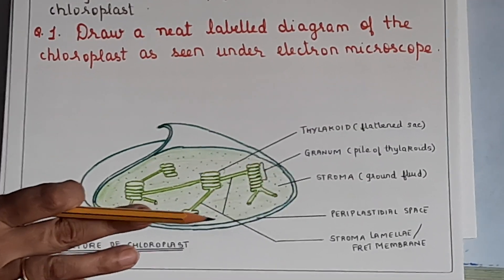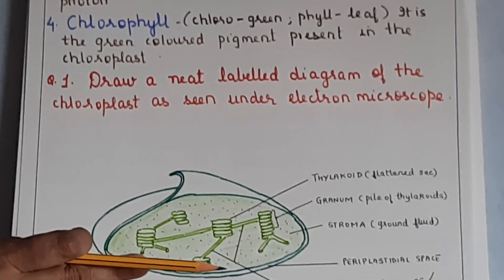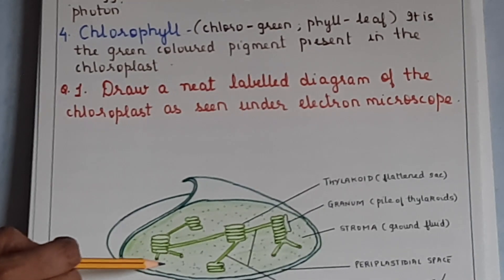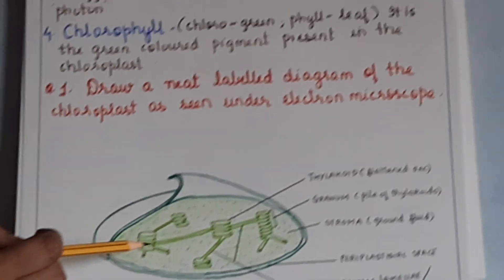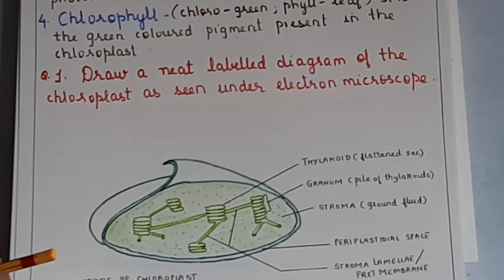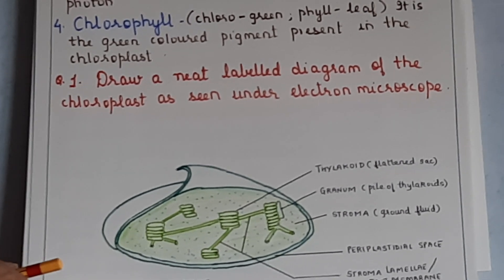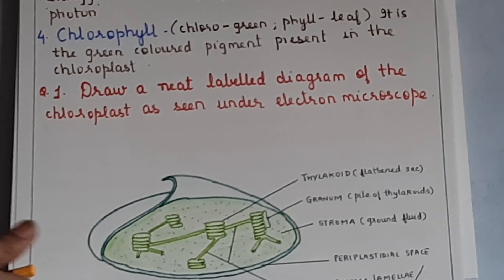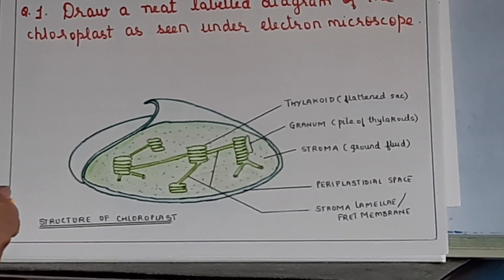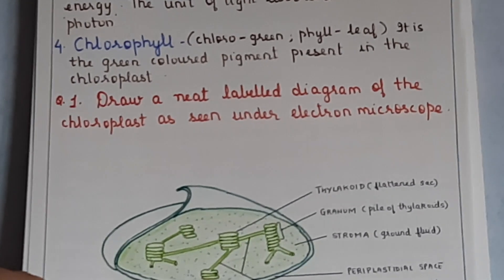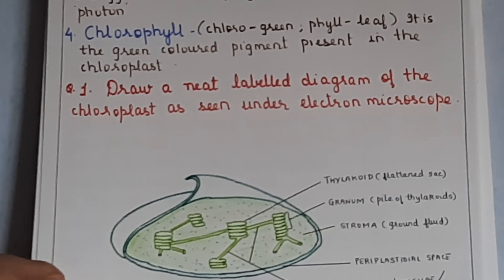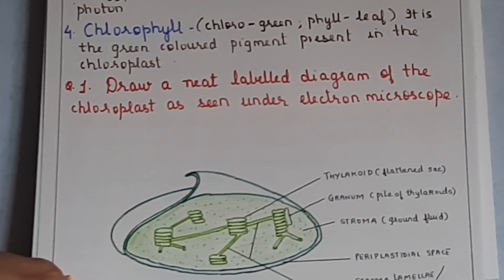Chlorophyll is a highly complex molecule made up of carbon, oxygen, nitrogen, and hydrogen. The inorganic component present in chlorophyll is magnesium — remember this, as it is frequently asked. There are almost 9 different types of chlorophyll, out of which chlorophyll A and B are most abundant. Chlorophyll absorbs light energy and gets activated, initiating photosynthesis. It appears green in colour because it absorbs light at the two ends of the visible spectrum — blue and red — and reflects the green light.